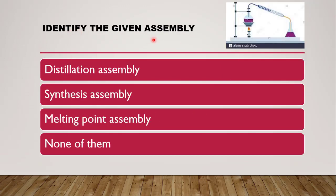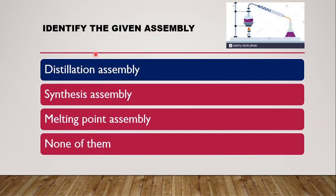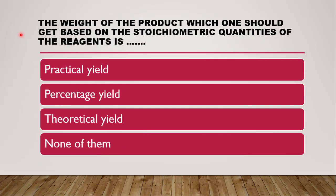Next question: identify the given assembly. This assembly, as you can see, is getting heated. The round-bottom flask is heated and the condensate is collected in a container or beaker below. The vapors get condensed and the distillate is collected. Whether it is distillation, synthesis, melting point assembly, or none of them — the correct answer is it is a distillation assembly.